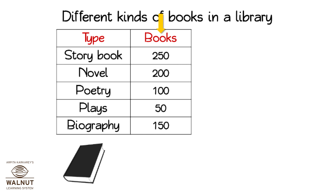The number of pictures would be less and the pictograph will be a sensible one. So let's start — how many books should one book picture stand for? Look at the numbers of books we have: 250, 200, 100, 50, and 150. Looking at the numbers, I would say one book picture stands for 50 books. You can even do one book picture for 10 books, but that's still a lot of pictures, so I choose 50 for this pictograph.